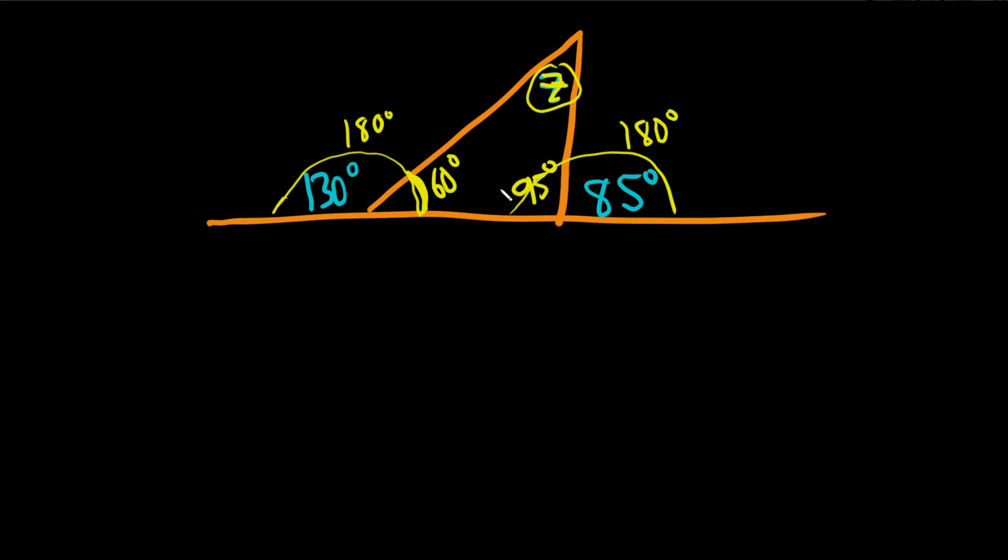Now that we have these angles on the inside, you can add up all of the interior angles and set them equal to 180 because when you have interior angles in a triangle, they always add to 180 degrees.